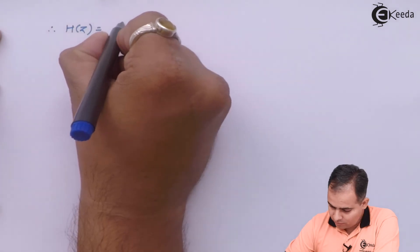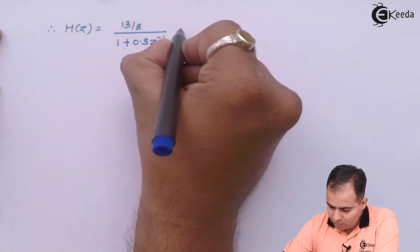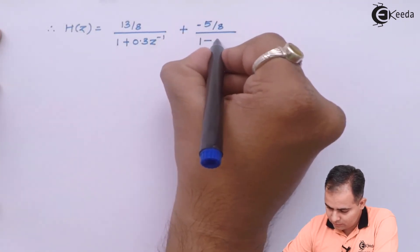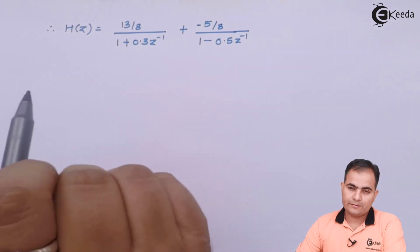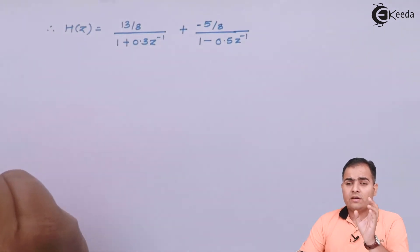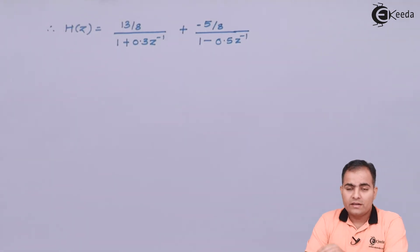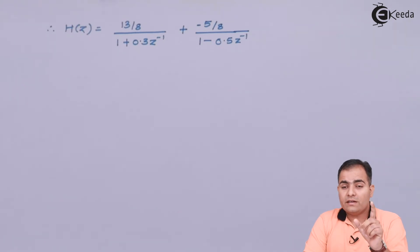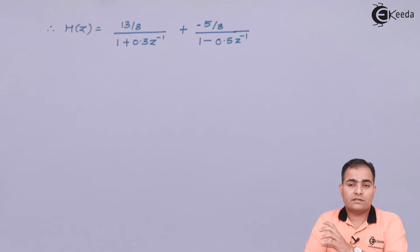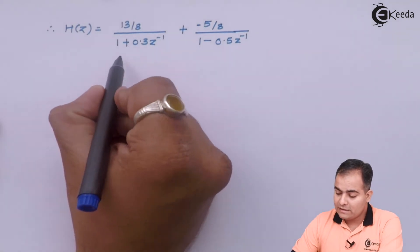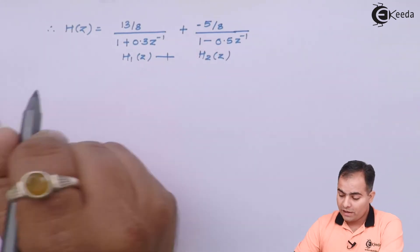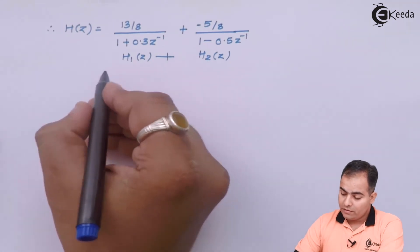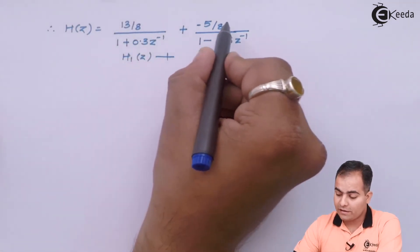In cascade format, two transfer functions are connected in series, so we calculated H1(z) and H2(z) separately by factorizing numerator and denominator. In parallel format, all transfer functions are connected in parallel. The first part, H1(z), and the second part, H2(z), are connected in parallel, and we will draw each separately.